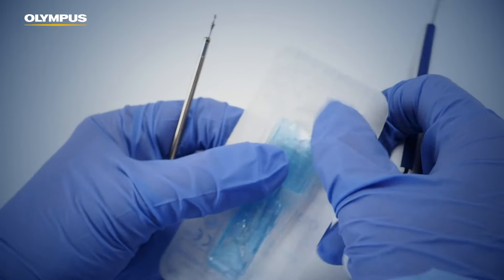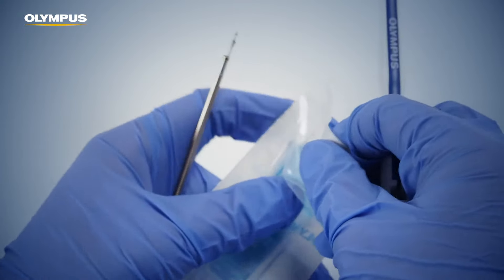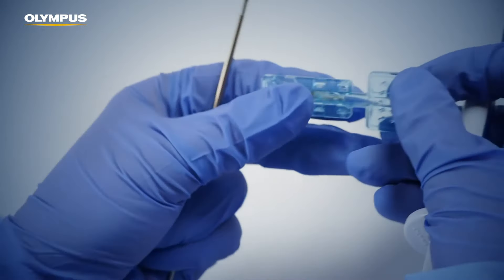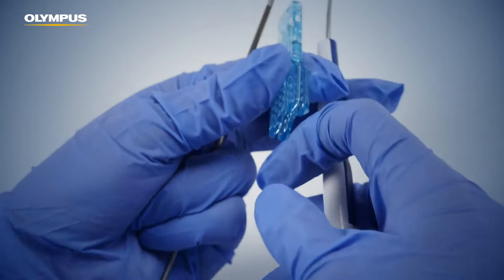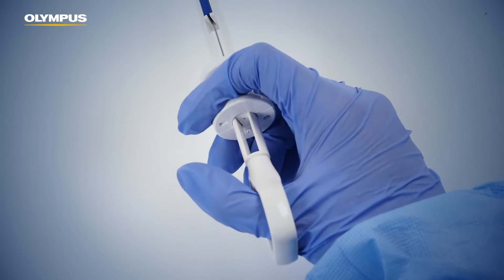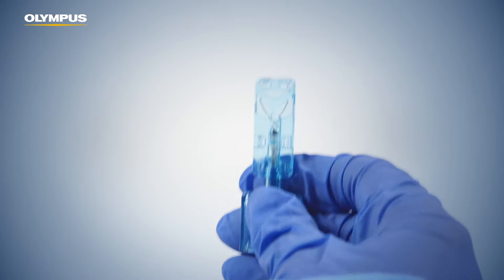Open the package containing the cartridge. Carefully pull the slider up to the ring. Place the cartridge on the coil sheath.